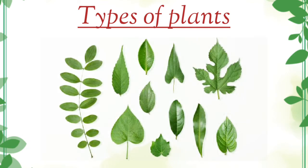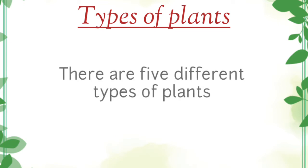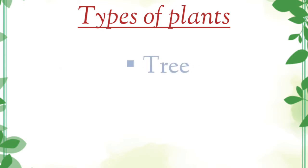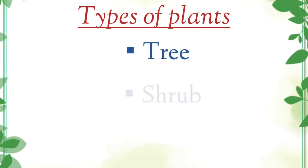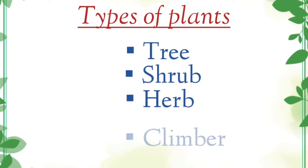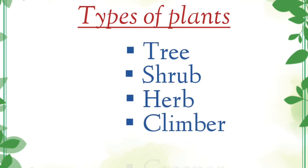Children, there are five different types of plants. What are they? They are tree, shrub, herb, climber, and creeper.